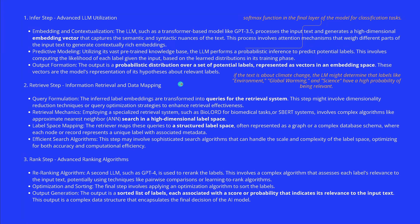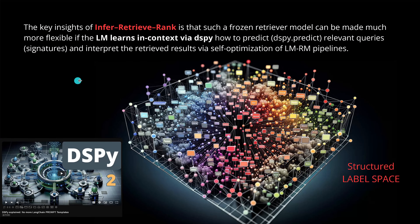Looking at the three steps again with real technical precision: the key insight of the Infer-Retrieve-Rank methodology is that a frozen retriever model can be made much more flexible if the language model learns in-context. We use the DSPy self-optimization and the DSPy Predict module to predict relevant queries. We have our signatures defined and interpret the retrieved results via self-optimization of our language model to retriever model pipelines, giving us a structured label space with perfect classification.